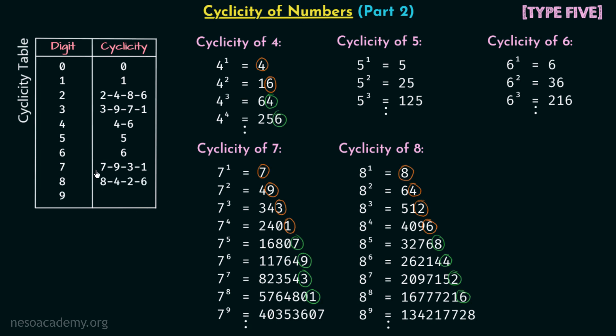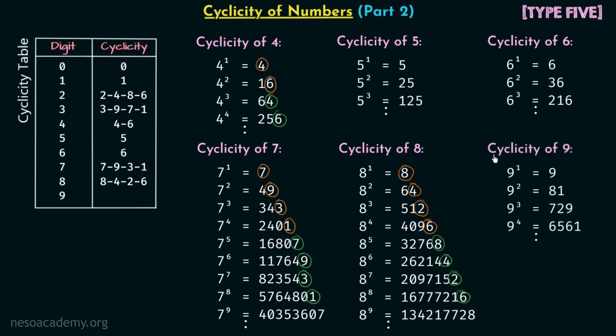You can observe that like digits 2 and 3, the cyclicities of 7 and 8 have 4 digits, which means after an interval of 4 the repetition takes place. Now we are only left to find out the cyclicity of digit 9.